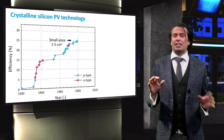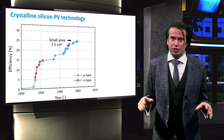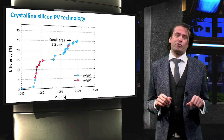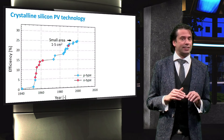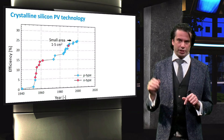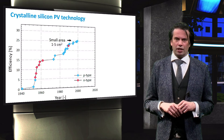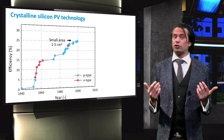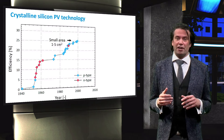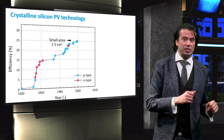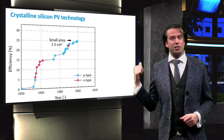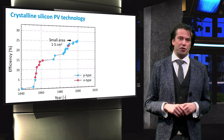For the last 70 years, the performance of crystalline silicon solar cells has steadily increased. The efficiency of solar cells with an area smaller than 5 square centimeters is plotted here over a period of 80 years.